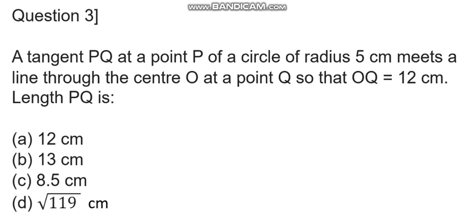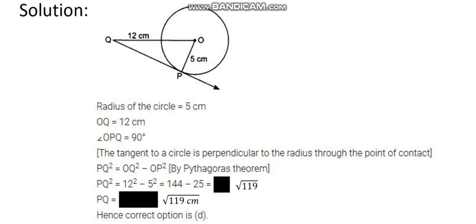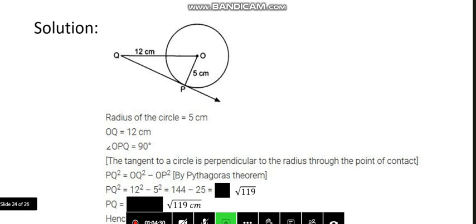Outside of the circle, OQ is equal to 12 as given. So the length of OQ is 12. If we try to draw the diagram, it becomes like this, right?